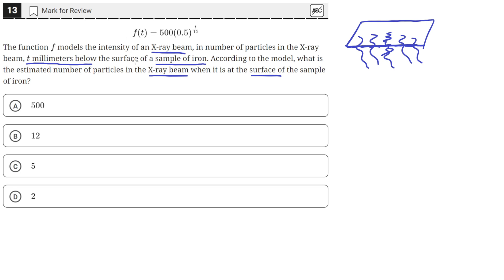So that means we need to find the value of this function, f of t, when the value of t is 0. Because 0 millimeters below the surface of the iron is the same as being on the surface. So we just need to find the value of f of 0 when t is 0.